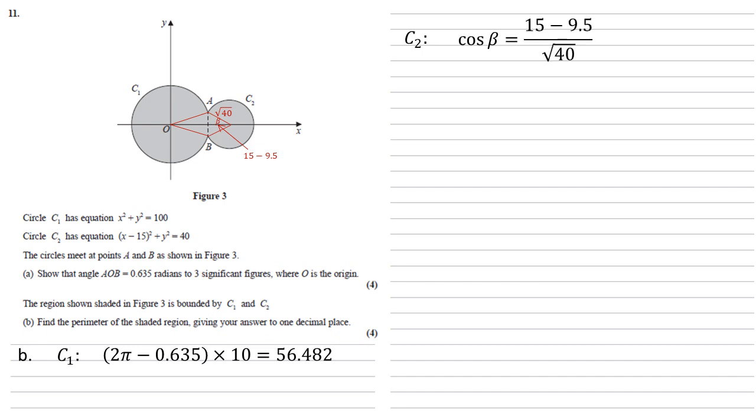Cos beta must equal the 15 minus 9.5 of the adjacent side over the root 40 of the hypotenuse. So beta equals 0.51635. And again, the angle at the centre must be double this, which is 1.0327.